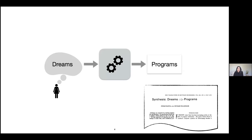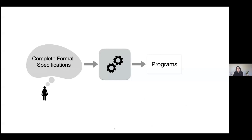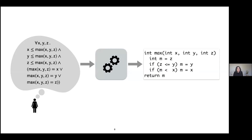Some of you may have heard of the dream of classical program synthesis, which actually goes back to the 1950s. Like many other computer science problems, it was posed by Church about circuit synthesis and can best be understood as an aspiration to generate programs from what Manna and Waldinger in the 1970s liked to call 'dreams.' In reality, what is expected in classical program synthesis from the user is that they dream up complete formal specifications of their desired program's expected behavior — for instance, in this example for computing the maximum of three integers, this logical formula over here.